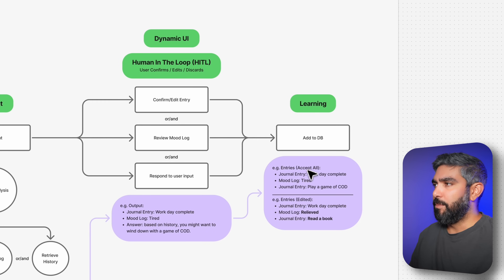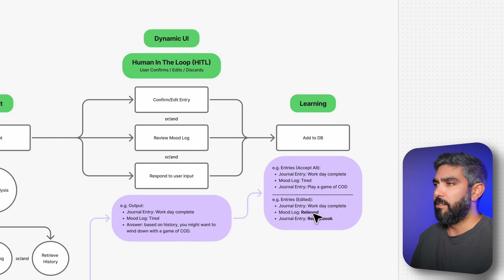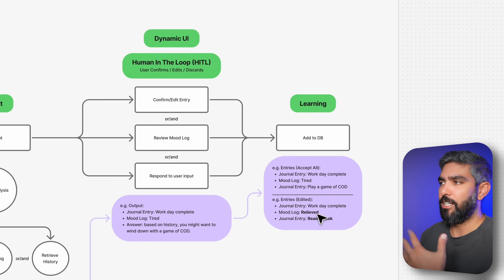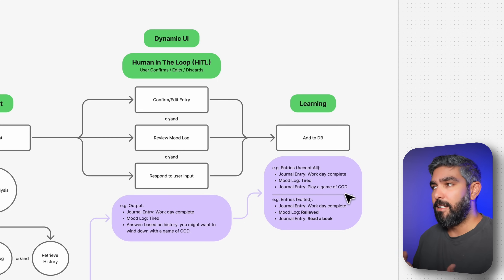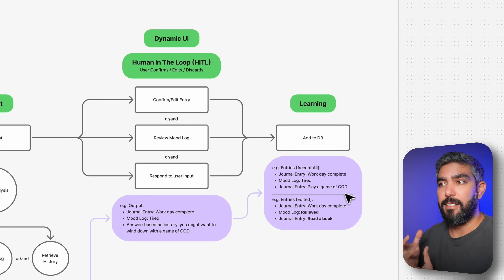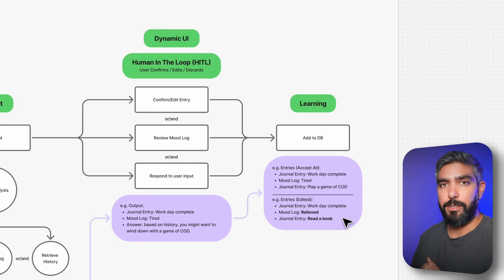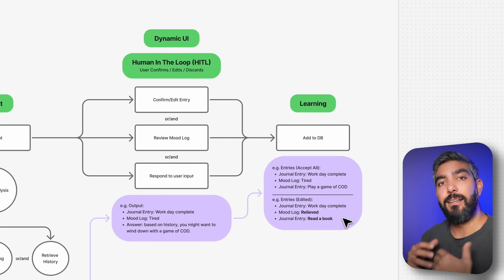Here I have an example if the user accepted everything, and an example if they made some edits — for instance, the user said 'I'm actually relieved, not tired,' changing their mood log. The AI can learn from this change: maybe the next time this person returns home from work, the agent will recognize they tend to feel relieved. And now the agent knows this person likes to read a book. You can see how all of this feeds back into the system, making it smarter — that's the feedback and learning AX principle applied.